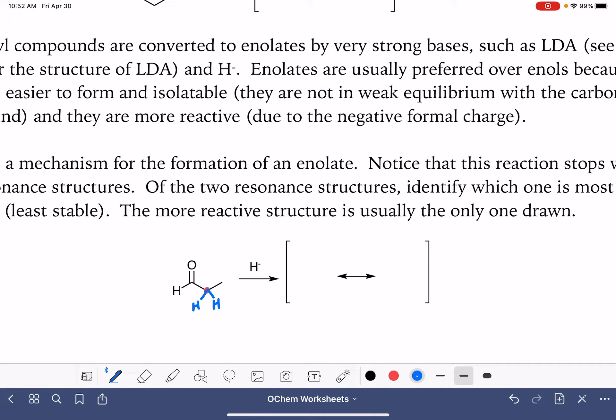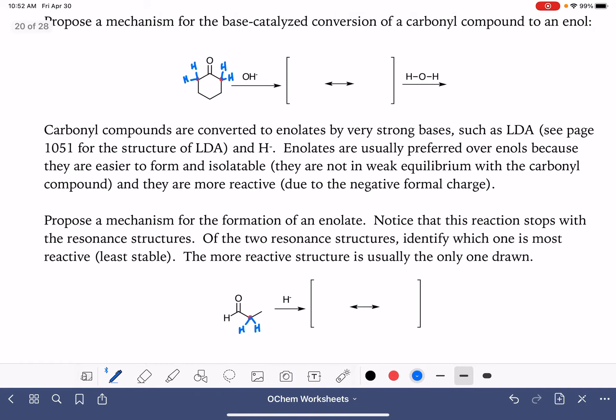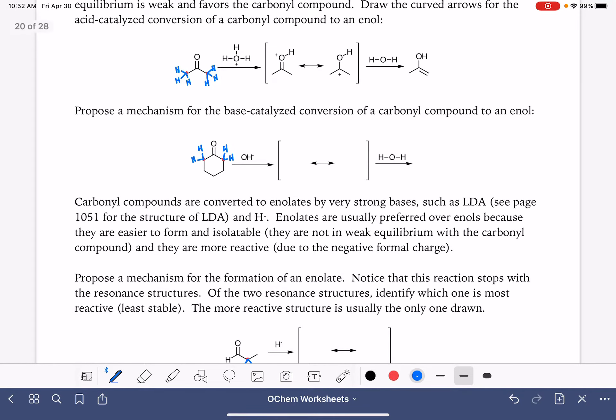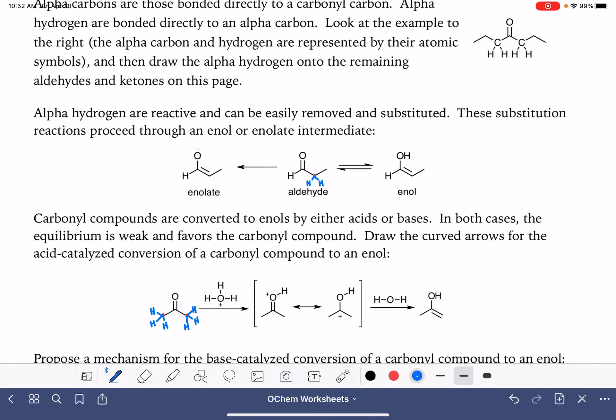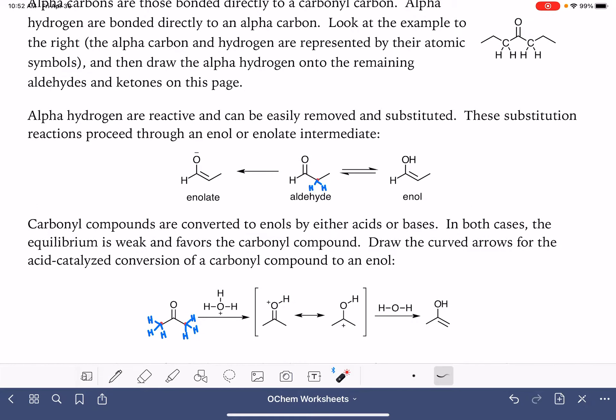The alpha hydrogens in these molecules are particularly reactive, and they do some really interesting chemistry. One of the things that they do is just kind of pop right off the molecule. And when this happens, the molecule, either the aldehyde or the ketone, is converted into an intermediate, either an enolate or an enol.